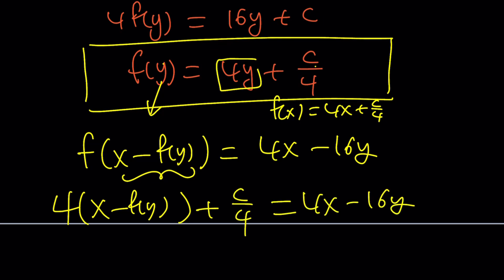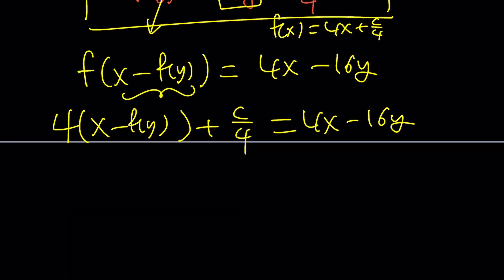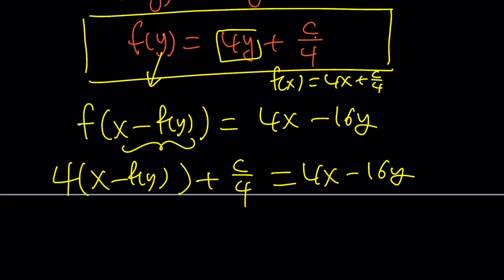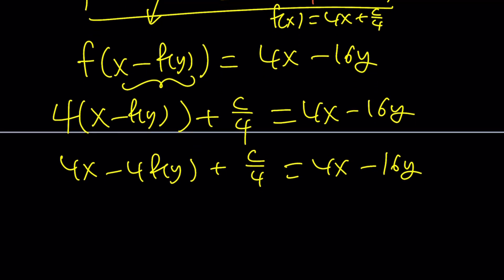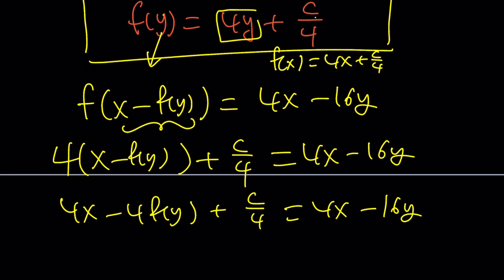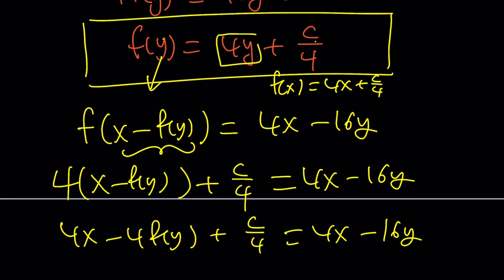From here, we can find c, hopefully. But, we have to replace f(y) with something. Let's go ahead and distribute first. 4x - 4f(y) + c/4 = 4x - 16y. But, what am I going to replace f(y) with, right? Well, you could also do this directly, plug it in. But, anyways.